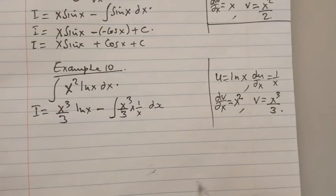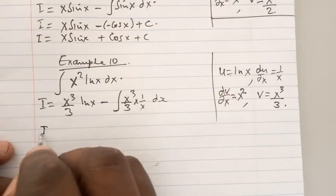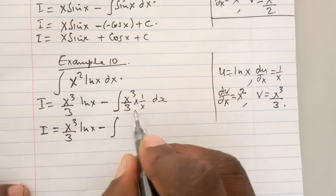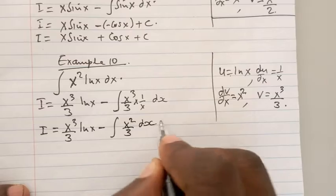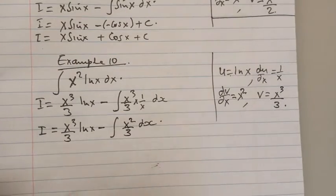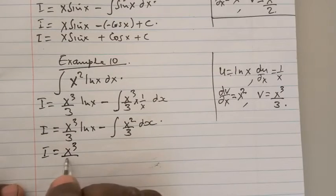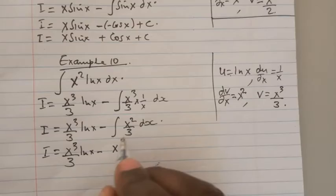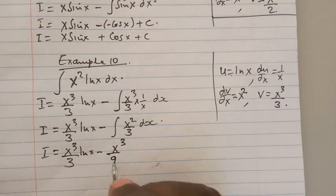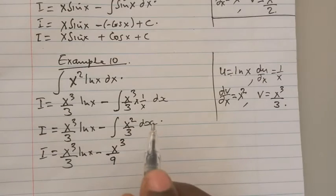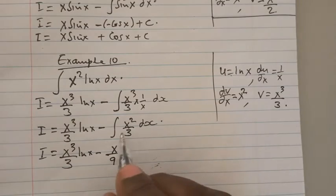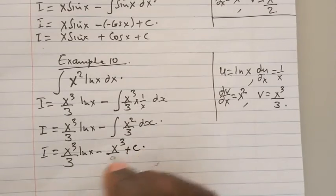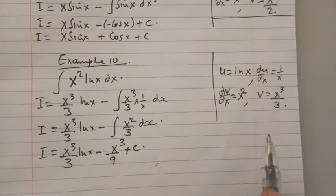This is showing x³/3 ln x minus the integral of—this x cancels with this—x²/3 dx. Our duty is just to integrate this part, which gives us x³/3 ln x minus x³ over 3 times 3, which is over 9, because x²/3 integrated is x³/3. But remember there was a denominator 3 here, so 3 times 3 is simply 9. This is plus c because it is an indefinite integral.